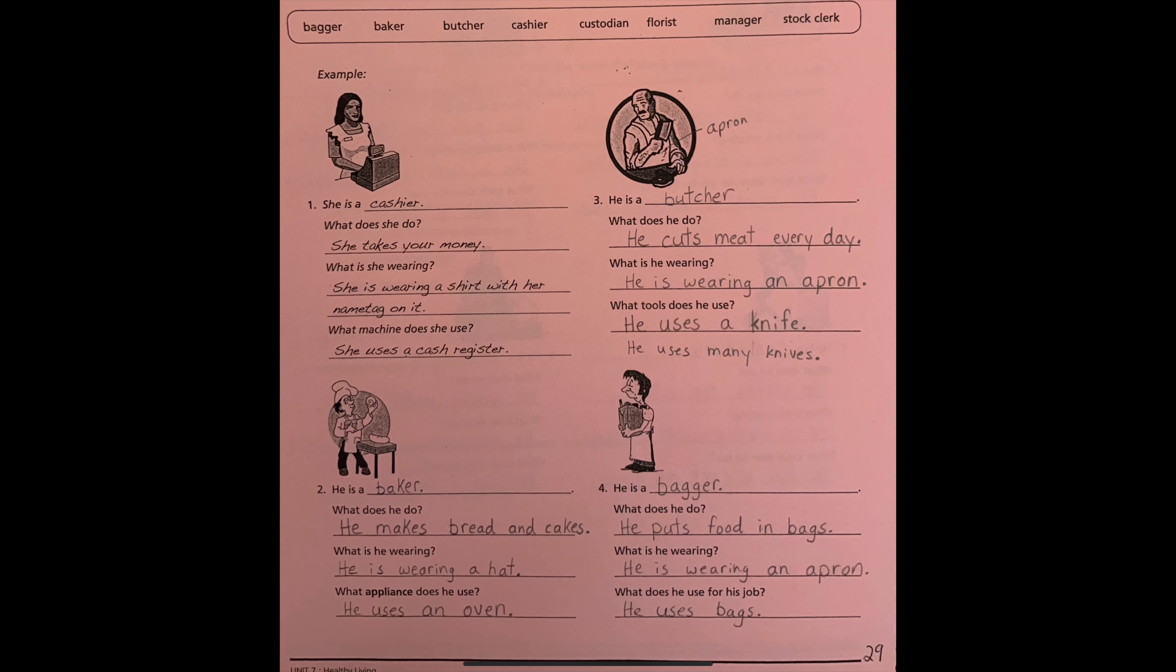Number three. He is a butcher. Look at the top to help you find the spelling. B-U-T-C-H-E-R. He is a butcher. What does he do? He cuts meat every day.